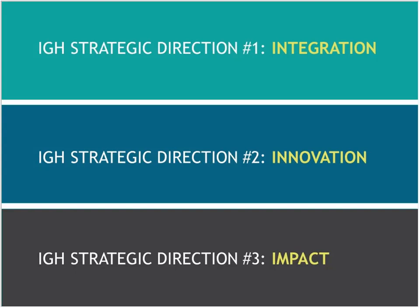These are the Institute of Gender and Health's three strategic directions — the things we exist to do. Number one is integration: we try to convince health researchers, funders, and journals in Canada and abroad that integrating sex and gender into health research makes it more rigorous science. It's not just about doing the right thing, although it certainly is — it also makes better science, and we have lots of examples as to why, some of which I'll share today.